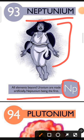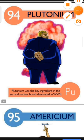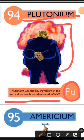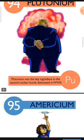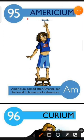Element number 94 is Plutonium. The characteristic of Plutonium is: Plutonium was the key ingredient in the second nuclear bomb detonated in WWII. Element number 95 is Americium. The characteristic of Americium is: Americium, named after America, can be found in home smoke detectors.